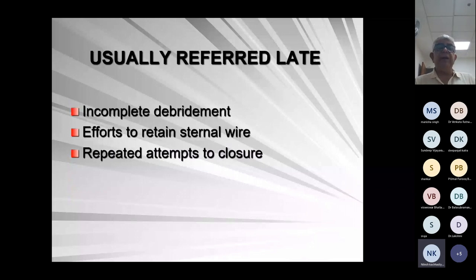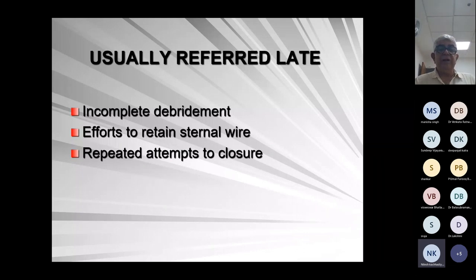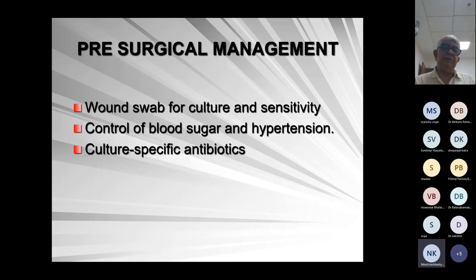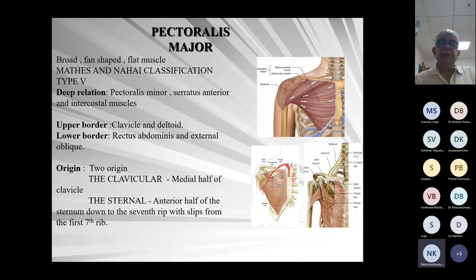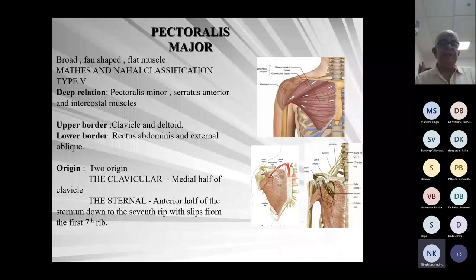These patients are usually referred late because cardiothoracic surgeons go on debriding incompletely — they want to retain the sternal wire and keep suturing. Pre-surgical management involves sugar control, culture-specific antimicrobials, and bone debridement. The students have seen the pectoralis major muscle flap used for oral malignancy. Today I am going to show a different use of that pectoralis major muscle flap.